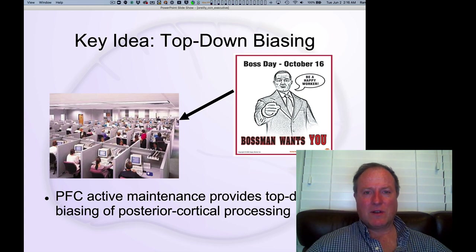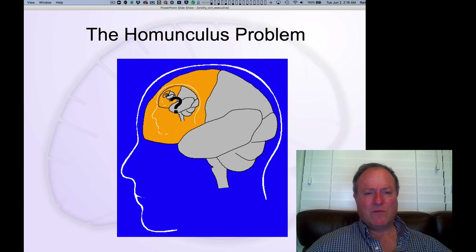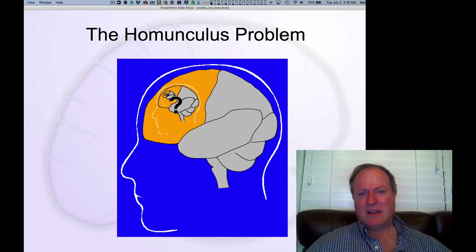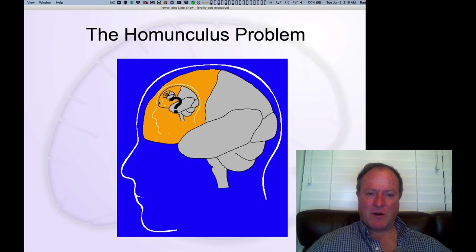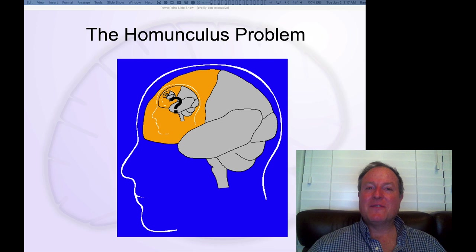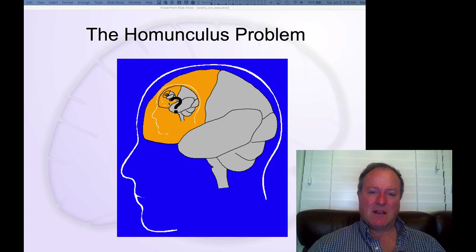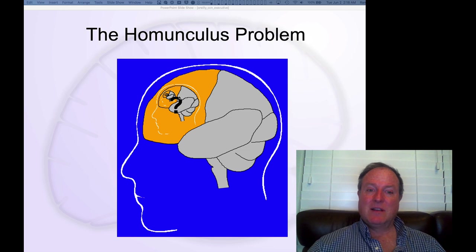This doesn't really answer all the questions, because you need to know what makes that boss so smart. This is what we can describe as the homunculus problem — you have some explanation for intelligent cognitive behavior that essentially amounts to the idea that you have intelligence in a part of your brain, but that means you haven't really explained where that intelligence comes from. What makes that part of the brain so intelligent? It must have some secret prefrontal cortex as well. You get this infinite regress problem — turtles all the way down. We really need a mechanistic explanation that avoids this infinite regress and allows us to understand why the frontal cortex can be smart in a way that doesn't just appeal to being smart.